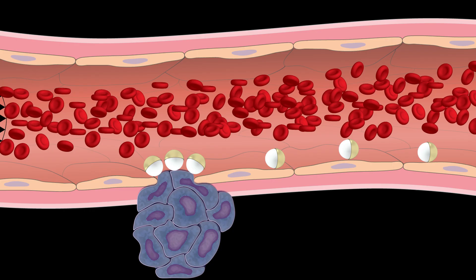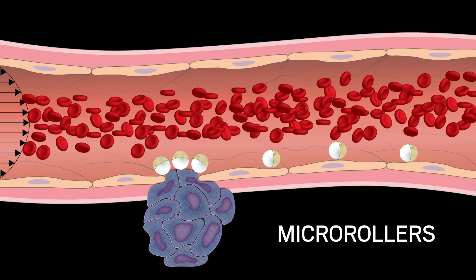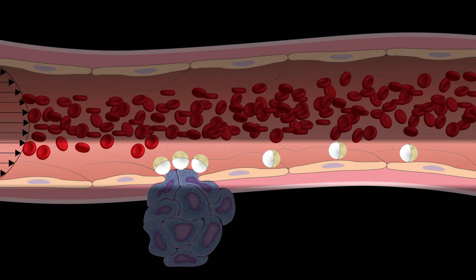The team calls these bots micro-rollers because they navigate blood vessels by rolling along their walls. By sticking to the walls where blood flow is slower, with the help of a magnetic field, the micro-rollers can roll against the bloodstream, which has been a challenge for bots of this size.